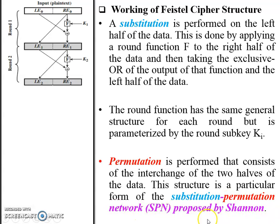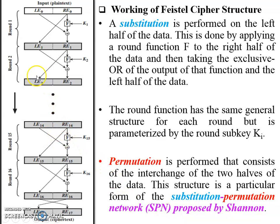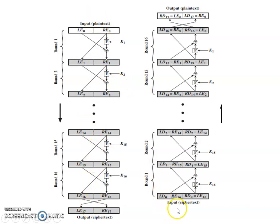This process continues for rounds 1 through 16. Finally, the positions of LE16 and RE16 are interchanged to generate the output, and the entire block is considered as ciphertext. The encryption diagram shows plaintext as input and ciphertext as output after all 16 rounds.